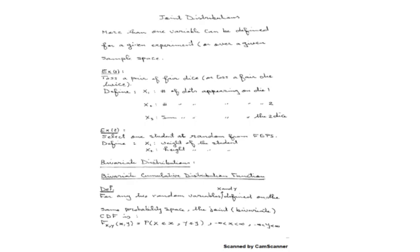Another example, example 2: if we select a student at random from our faculty, from FIPS, and we define x1 to be the weight of the student and x2 to be the height of the student. So now we have two random variables — you can define more.